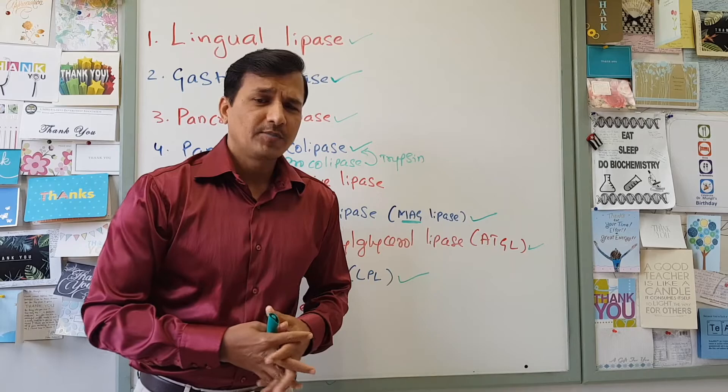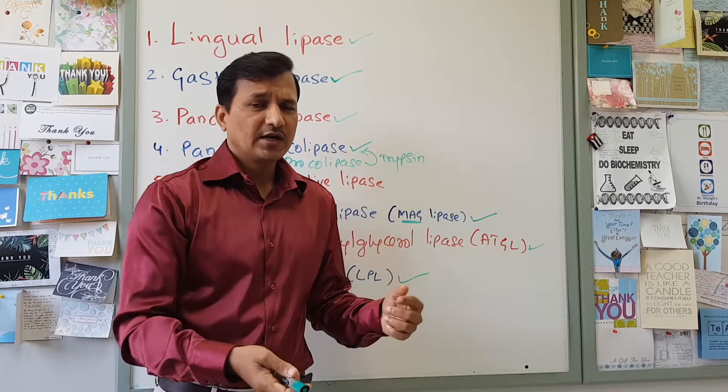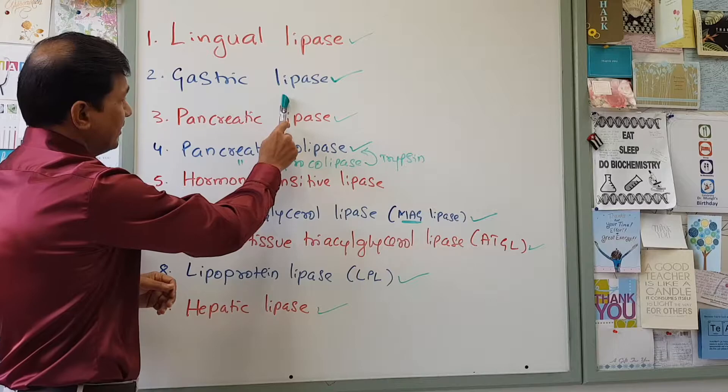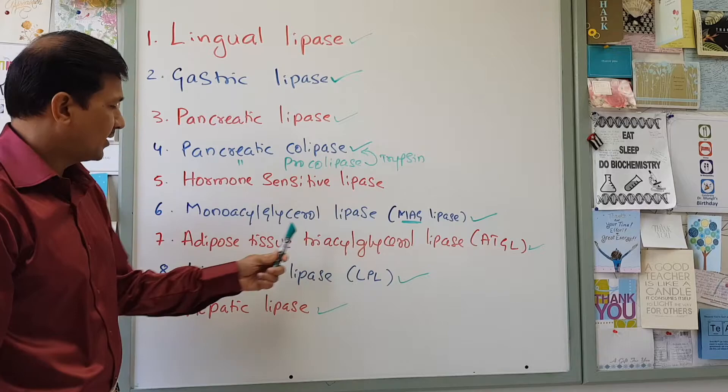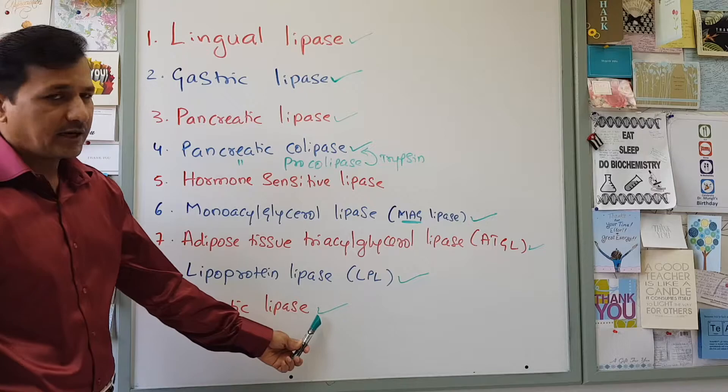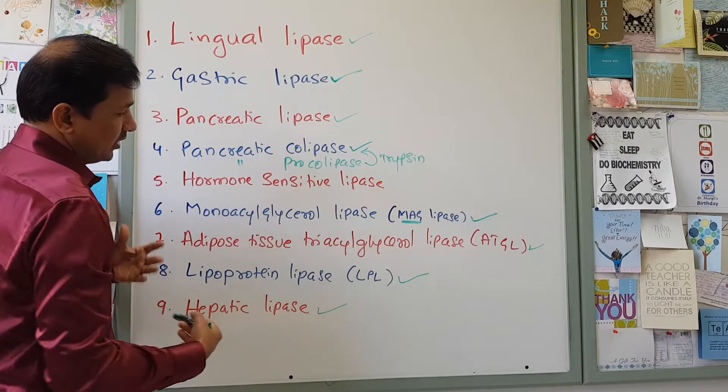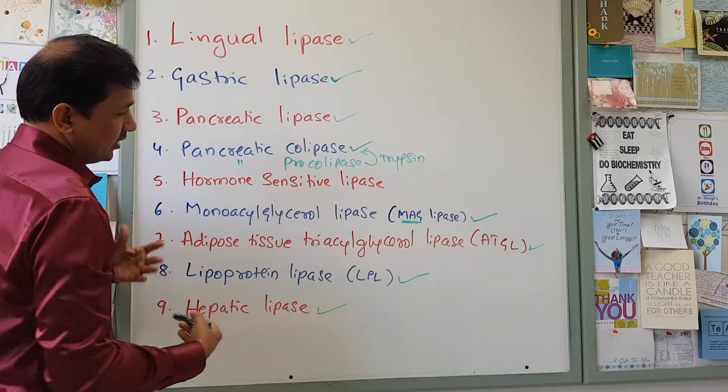Those are all the lipases I know so far — if you know more, let me know in the comments below. To quickly summarize: we have lingual lipase, gastric lipase, pancreatic lipase, pancreatic colipase (which comes as pancreatic pro-colipase), hormone-sensitive lipase, monoacylglycerol lipase, adipose tissue triacylglycerol lipase, lipoprotein lipase, and hepatic lipase. That gives us 9 lipases plus pro-colipase, so in fact 10 lipases total.